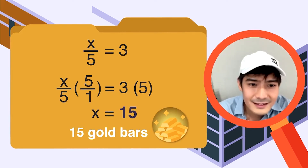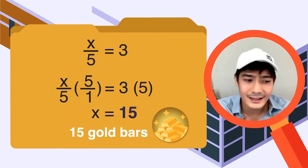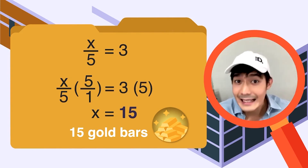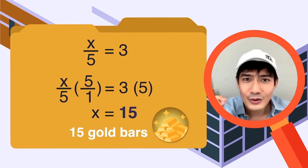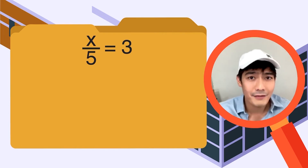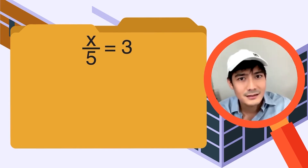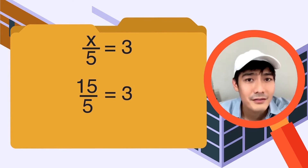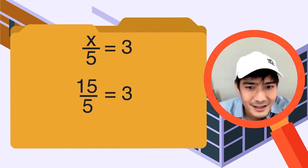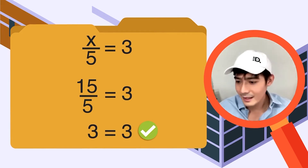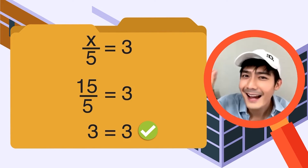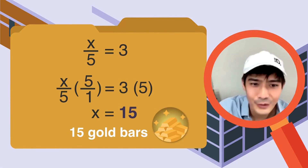X is 15. Dahil dito sa Math Dali, hindi tayong pwedeng ilagay lang natin na final answer yan — kailangan i-review muna natin yung ating sagot. Let's substitute. I-substitute natin yung x — gagawin natin siyang 15. 15 over 5 is equal to 3 — simplify lang natin. 15 over 5 is 3 — we get 3 talaga. But we are not yet done — dahil yung 15, lalagay pa natin ng label. Importante yan: 15 gold bars!